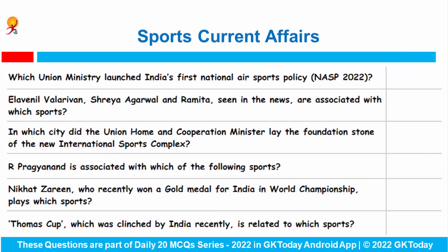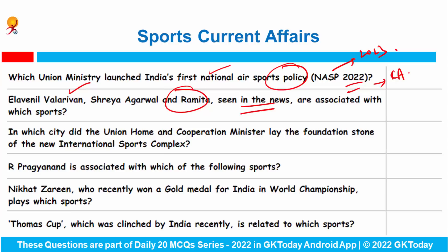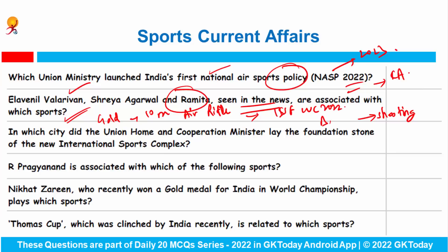Now some important sports-related current affairs in the revision section. Which union ministry launched India's first National Air Sports Policy 2022? The answer is the Ministry of Civil Aviation. The vision is to make India one of the top air sports nations by 2030. Ilanil Valarivu, Shreya Agarwal, and Ramita — seen in the news recently — are associated with which sport? They are related to shooting. This is the Indian women's shooting team that won gold in the 10-metre air rifle women's team event at the ISSF World Cup 2022, held in Baku, the capital of Azerbaijan.